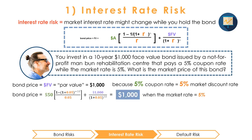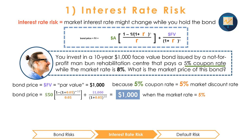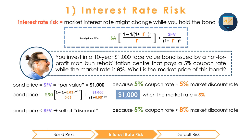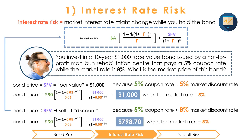We can prove this using our PV annuity formula. However, what happens if next year the market interest rate increases to 8%? Your 5% coupon bond isn't looking so great now. While you earn a return of 5%, other investors in the market can earn 8%, so nobody is going to want to buy your $1,000 bond at full price. Using our bond valuation formula — a combination of the PV of an annuity formula for our coupons and the PV of a single sum for our principal — this bond is now only worth $798.70 in the market. The value of your investment fell by 20%.